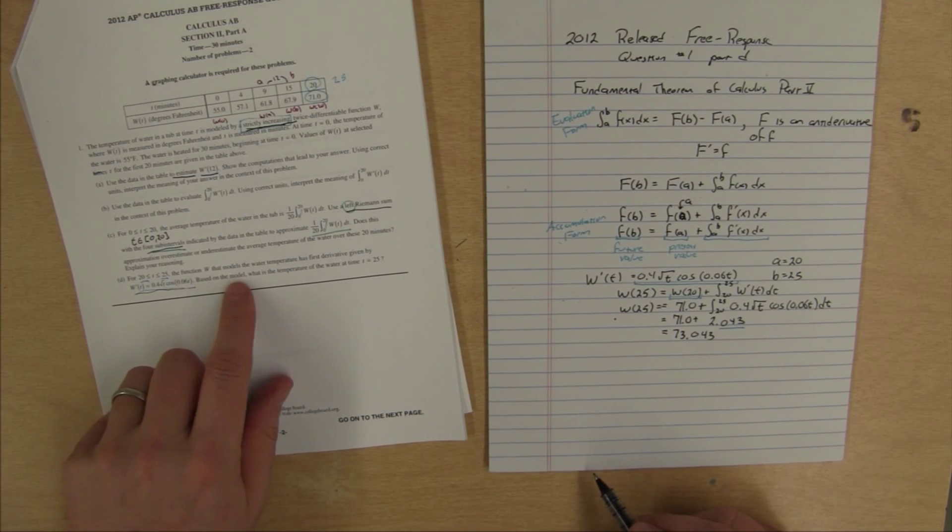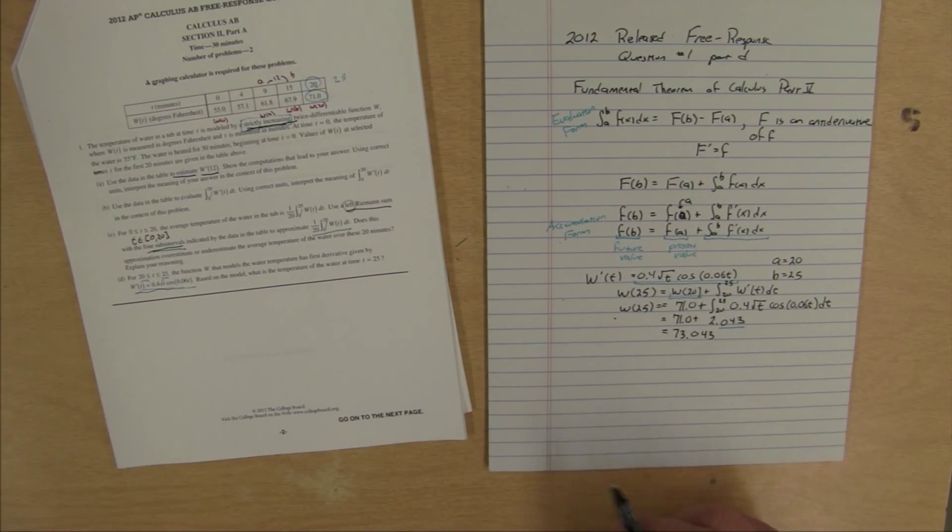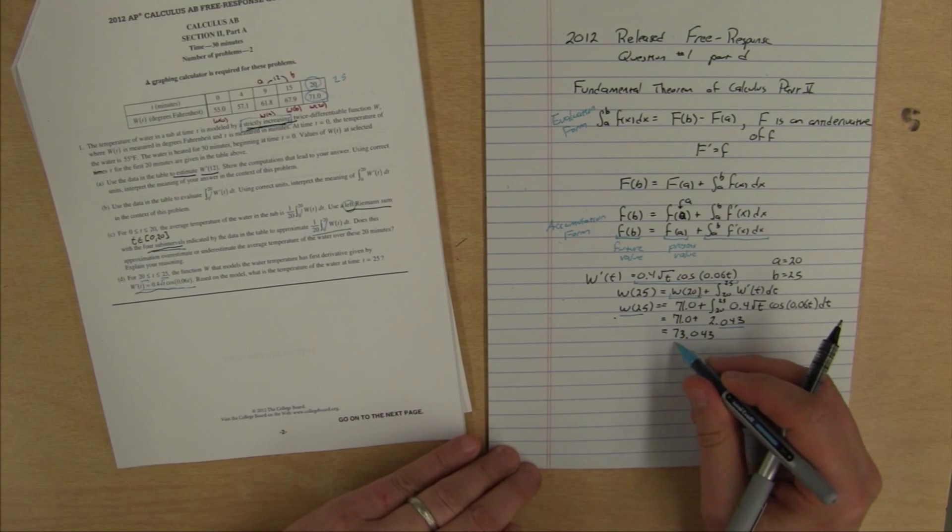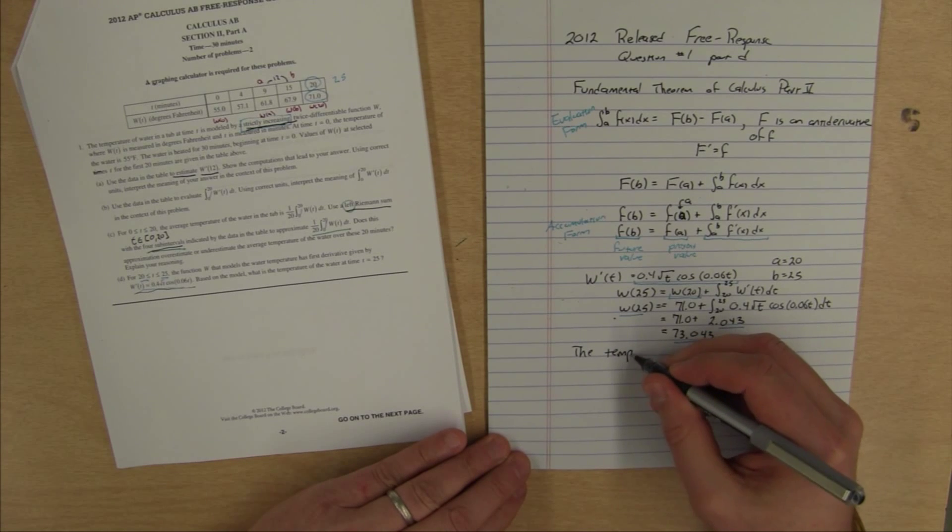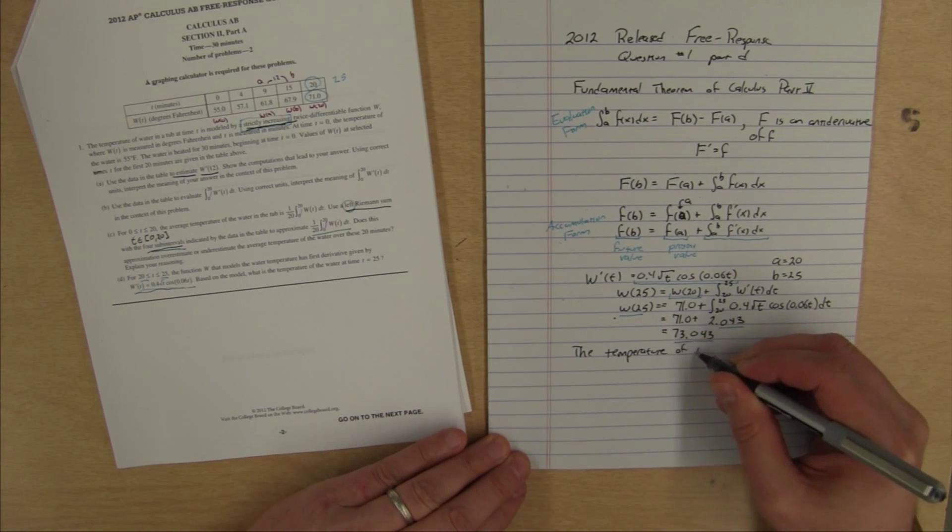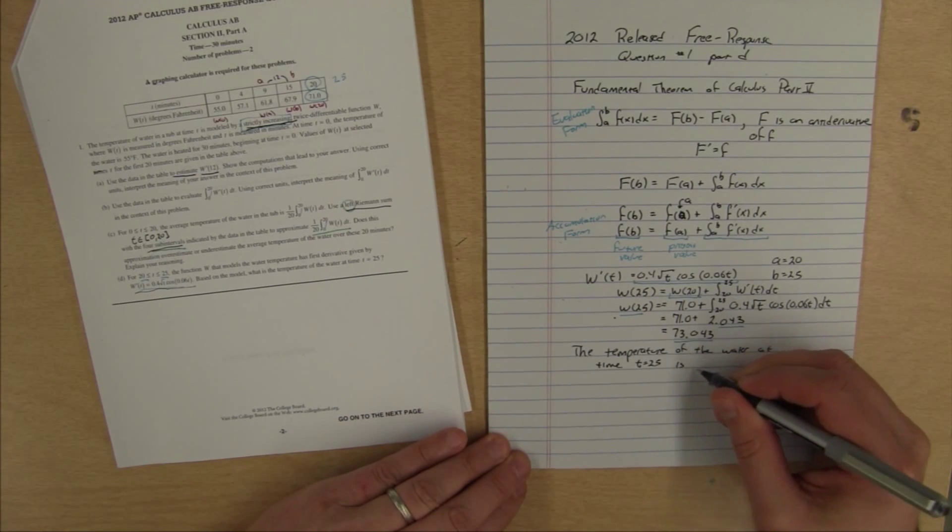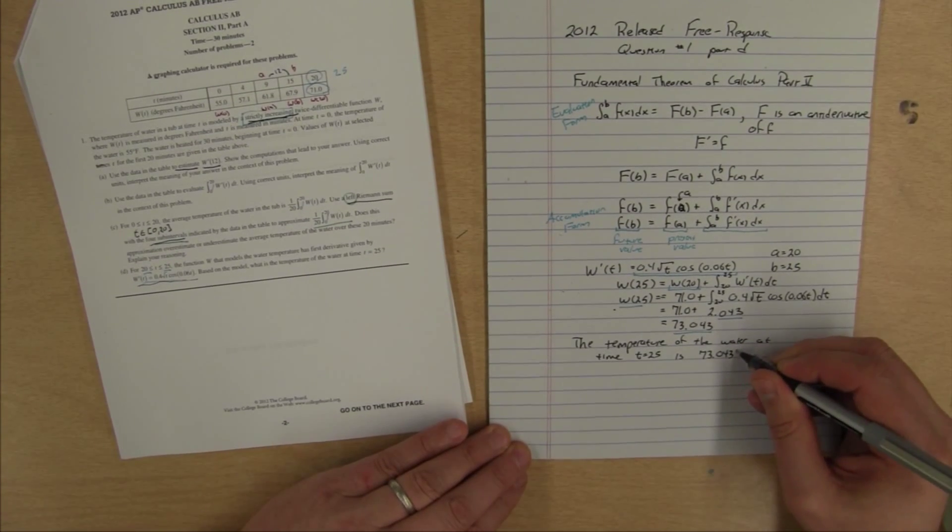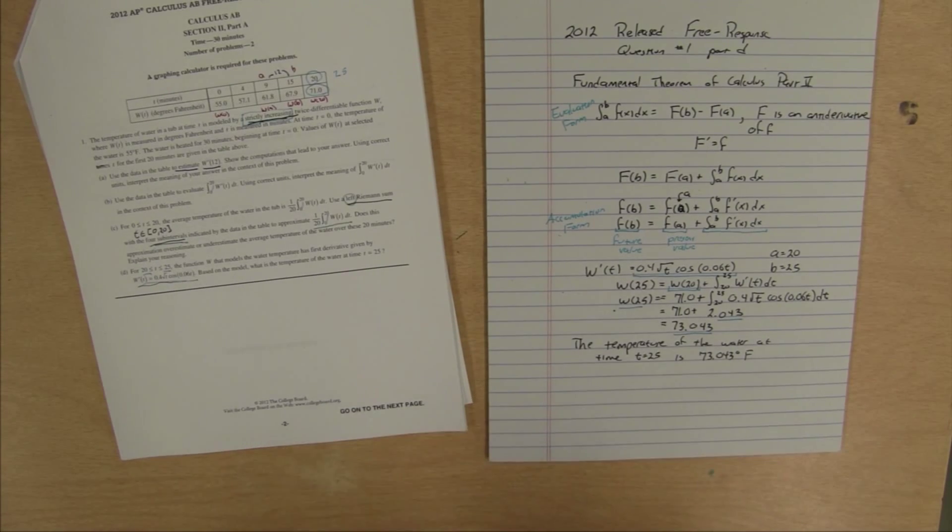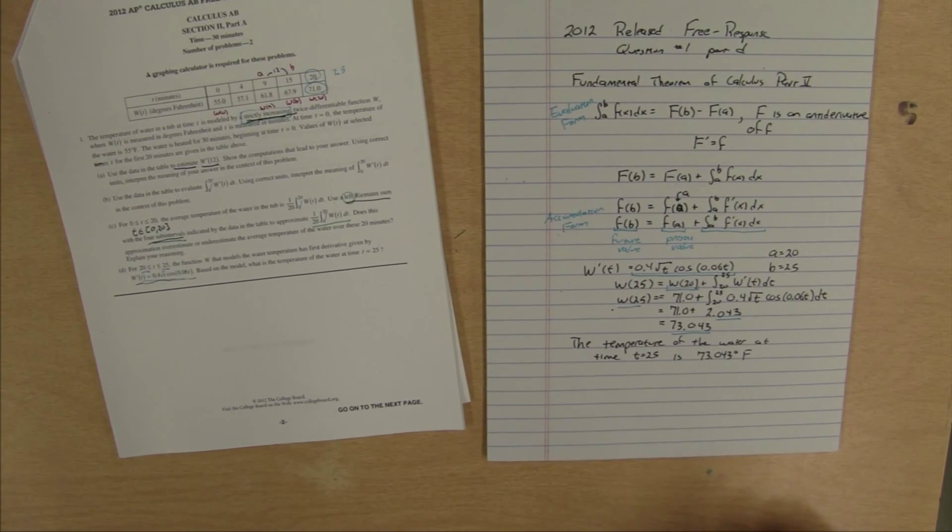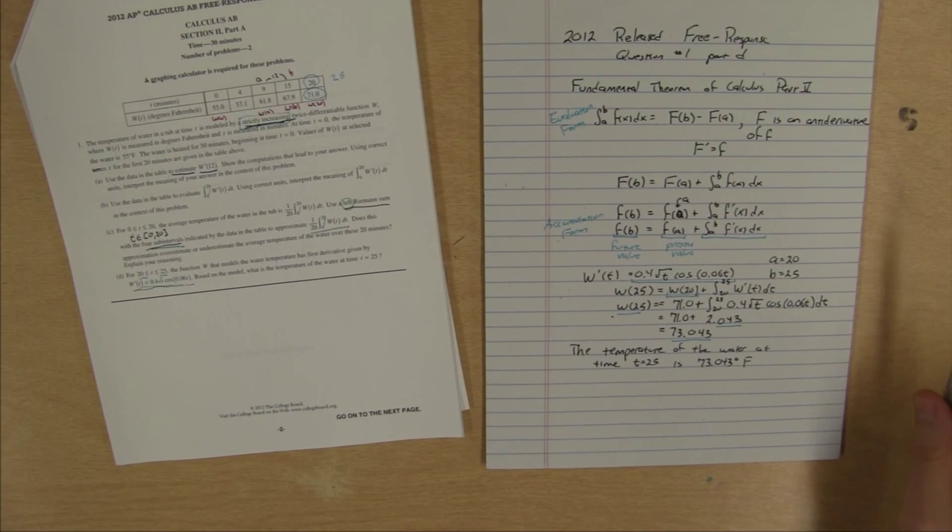The question says, based on the model, what is the temperature of the water at time t equals 25? Since we know that w of 25 is equal to 73.043, we can say the temperature of the water at time t equals 25 is 73.043 degrees Fahrenheit. A nice temperature for my tub. Maybe I'd like it to be 73.047, but I'll go with 73.043. That's warm enough for me. That is part D, and we're now done with question number one of the free response questions from 2012.